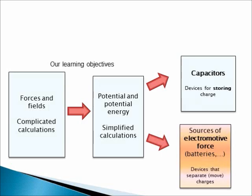Any electric circuit that sustains a constant current must include a device that creates an electromotive force to push the charges. One familiar device of this kind is a chemical battery. Batteries do not store charge, but rather separate positive and negative charges and move them around. Inside the battery, the chemical energy is converted into kinetic energy of the current that leaves the battery. The current carries this energy to other devices that are connected into the circuit.